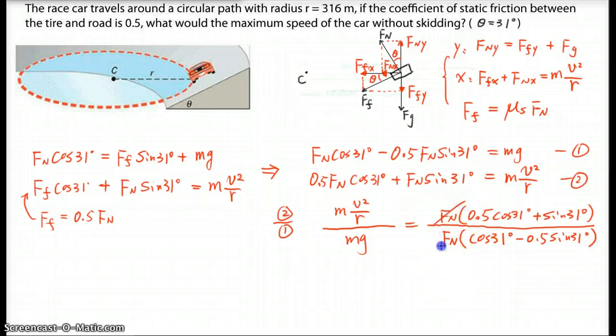So here on the bottom we have Fn, so again we factor the Fn out, so we get cos 31 degrees minus 0.5 sin 31 degrees. You can see the Fn is cancelled out, the M is cancelled out, so you can solve for V. So I'm going to be quick to solve V. V is going to be square root of R G times 0.5 cos 31 degrees plus sin 31 degrees over cos 31 degrees minus 0.5 sin 31 degrees.